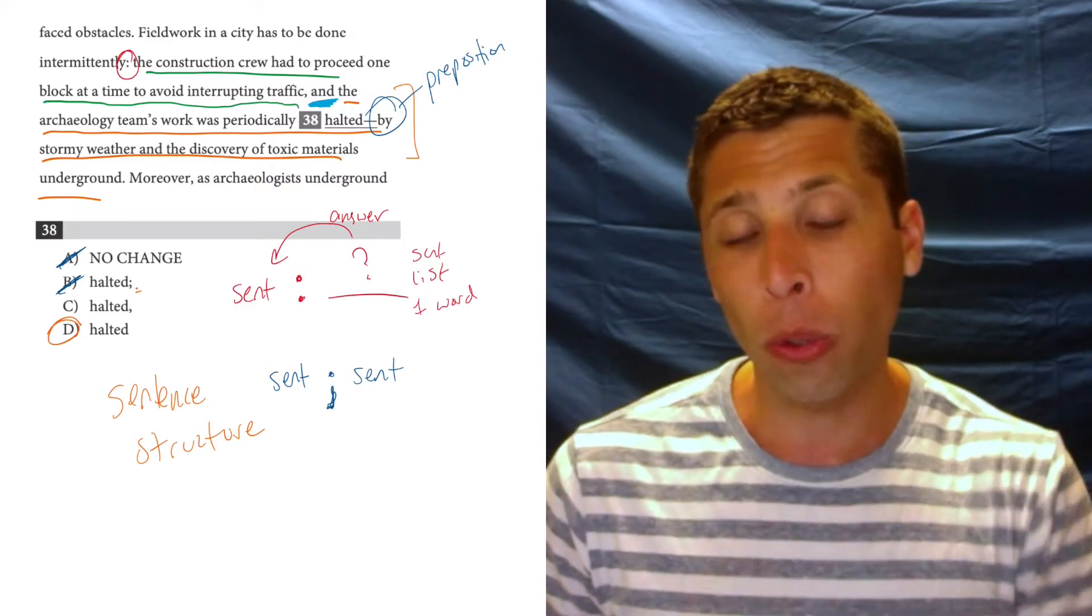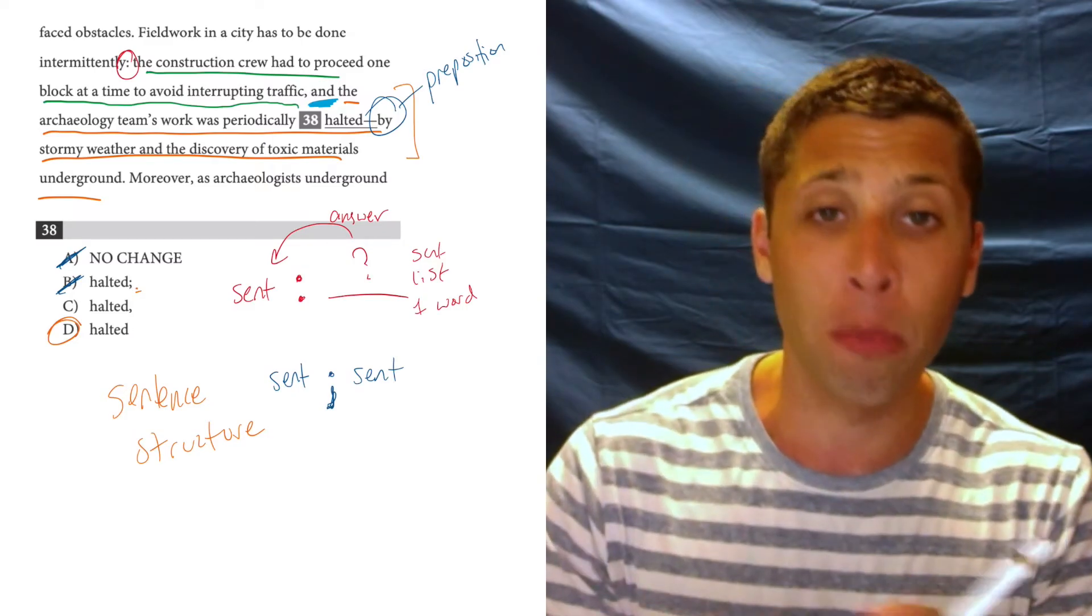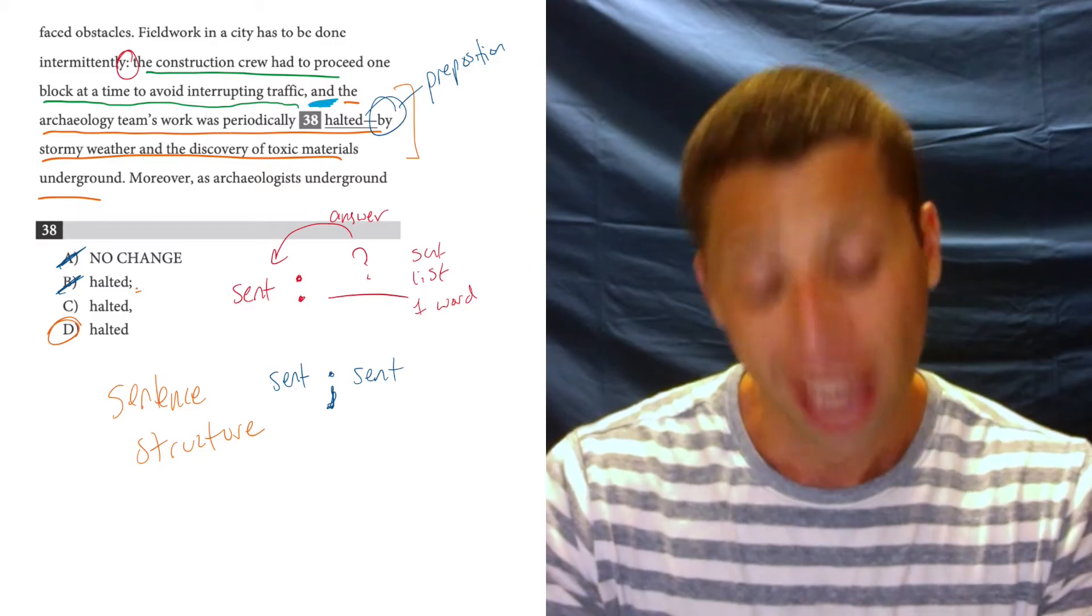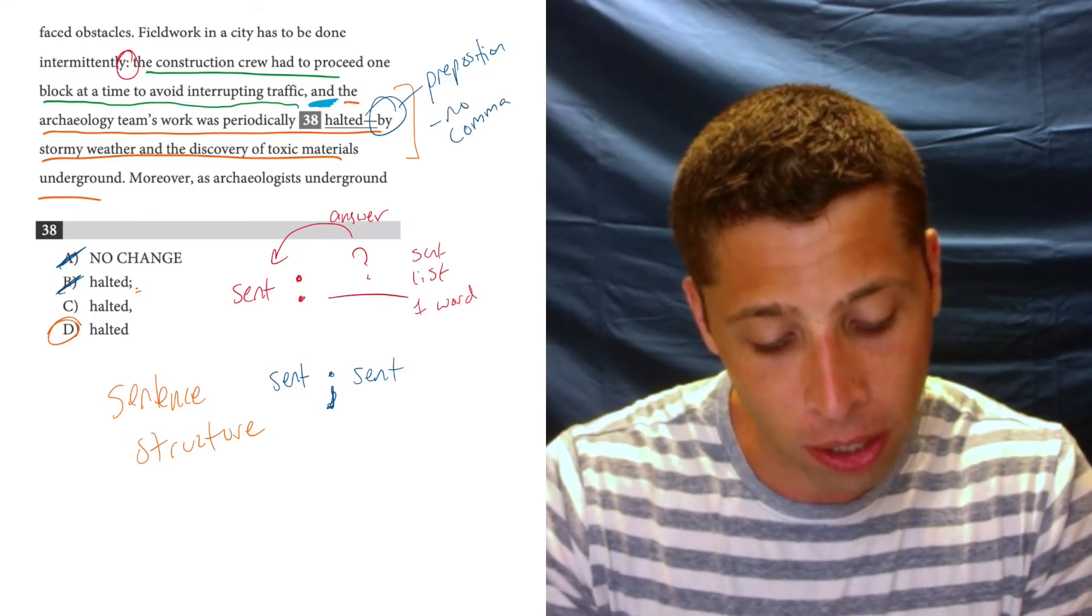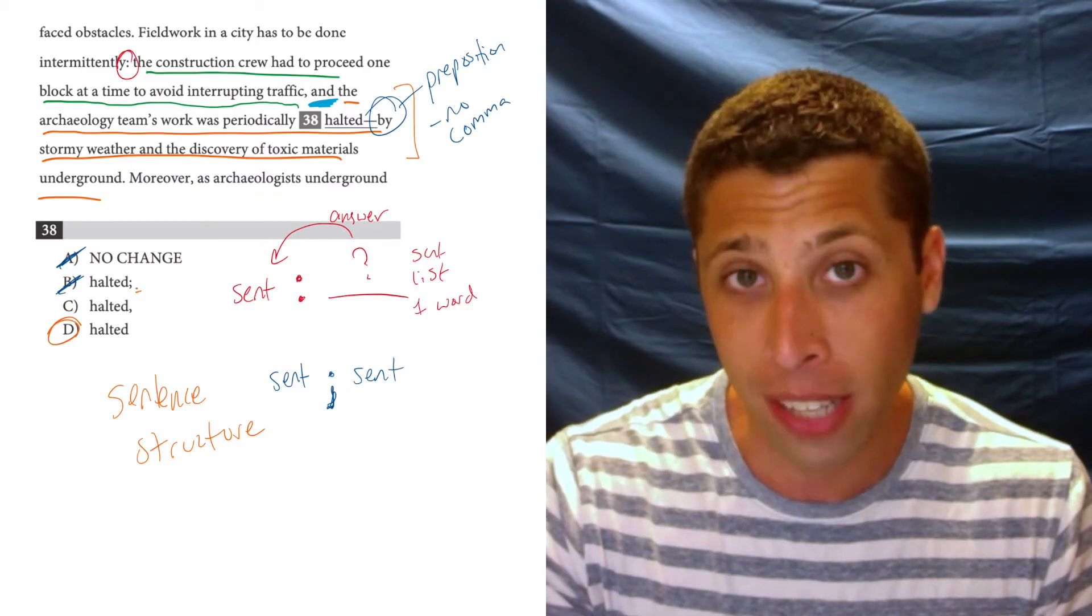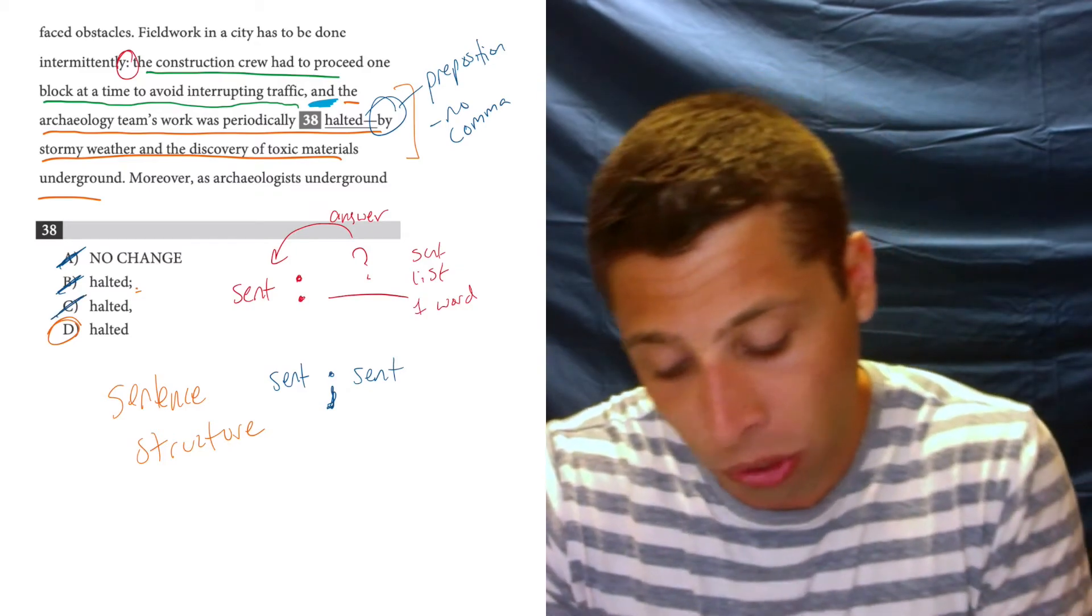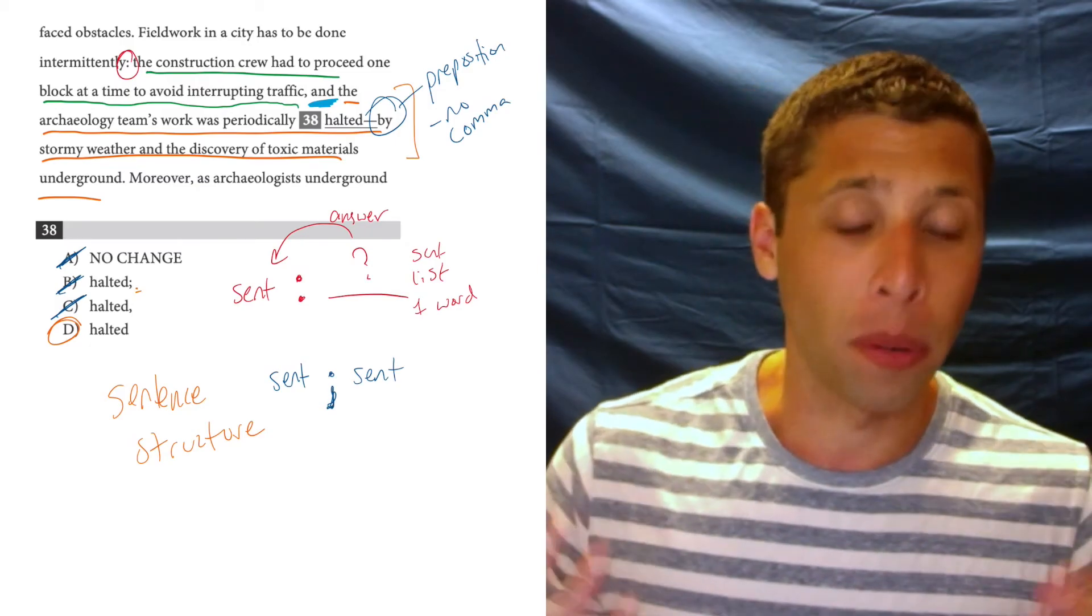by, with. Those little words allow us to add more information onto a sentence. And for whatever reason, when we attach an extra clause as a prepositional phrase, we just don't use a comma. It's just the rules. And so that leaves us exactly where we would have expected. But now you have some reasons to prove these answers right.